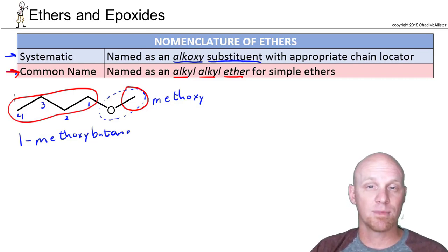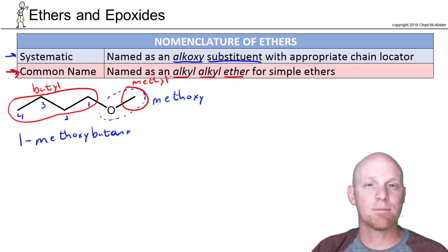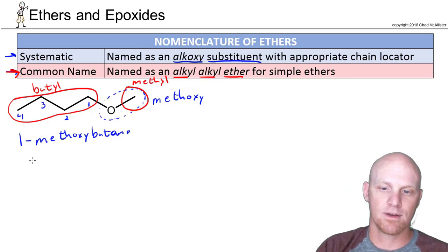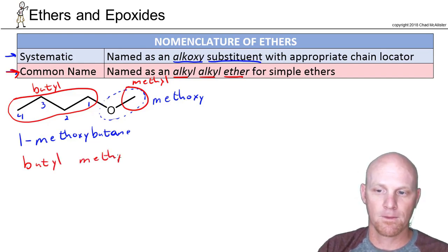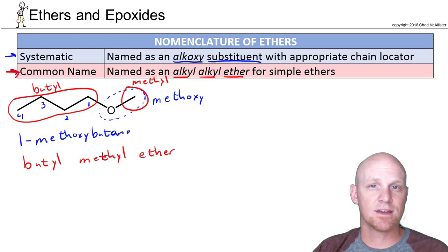But in this case we've got a butyl group on this side. We've got a methyl group on this side. And you're just going to name those in alphabetical order. So here butyl comes before methyl. And again not because it's longer because it comes first in the alphabet. So here we're going to say butyl word number one. Methyl word number two. And then simply ether. So that's butylmethyl ether. And again whether you name it 1-methoxybutane the systematic way or butylmethyl ether the common name, they're both accepted by IUPAC.